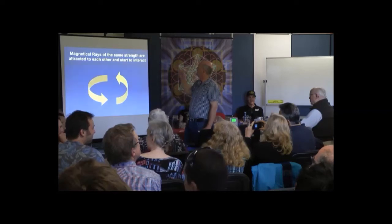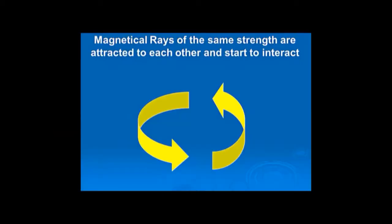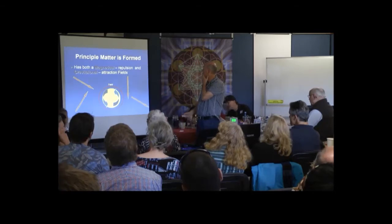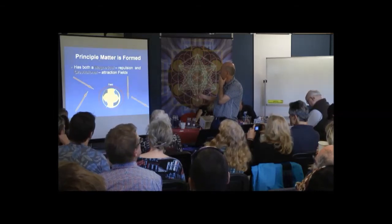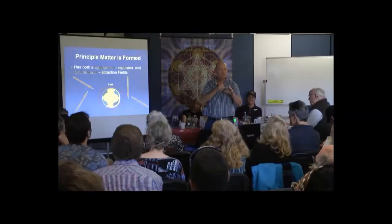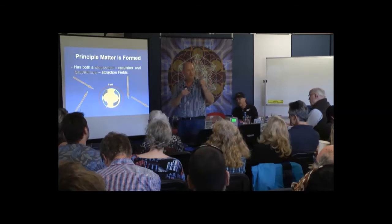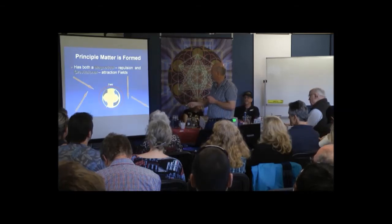In the magnetic rays, when you get this soup of magnetic rays, they start to interact — like attracts like. So you're going to get two rays of similar strength starting to find each other, get attracted, and start interacting with each other, because they have the same field strength. When they start attracting more, your principal matter is formed, because they end up forming your plasmasphere. When that interaction happens, that's when you create the magnetical and the gravitational — with their interaction, they're creating that field, which is your plasmasphere.